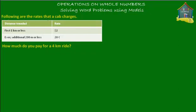It says that following are the rates that a cab charges. Here's the table of rates, and it has two columns: the first one is the distance traveled and the second one is the rate. Under distance traveled, the first kilometer or less of travel, you pay $2 to the cabbie, and for every additional 200 meters or less than 200 meters, you pay 20 cents.